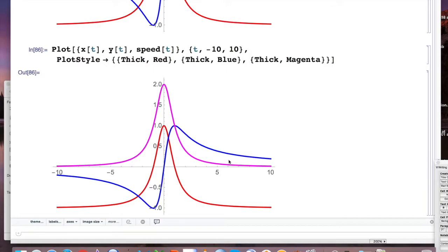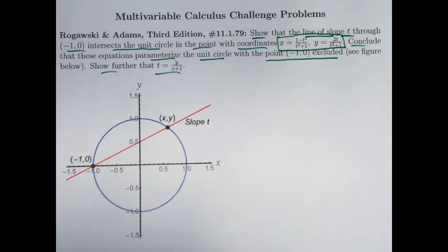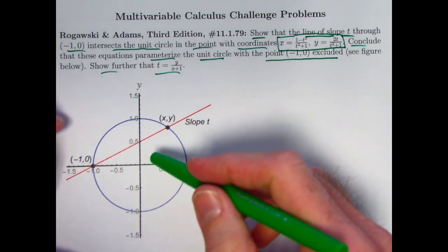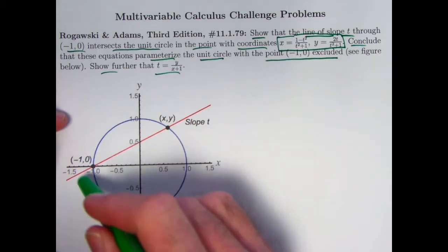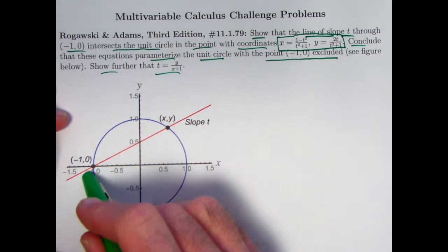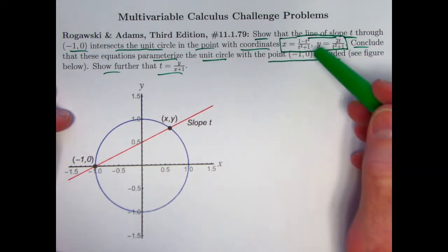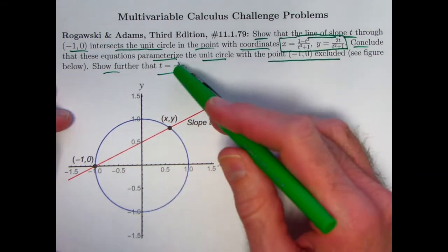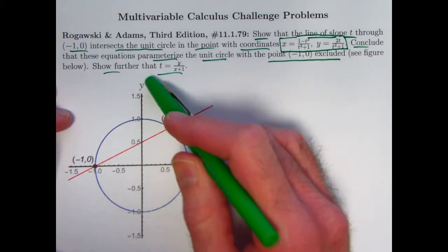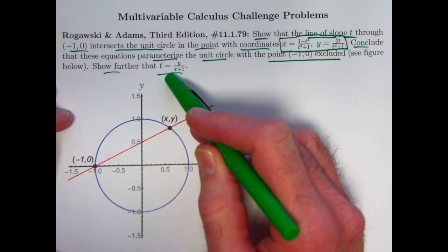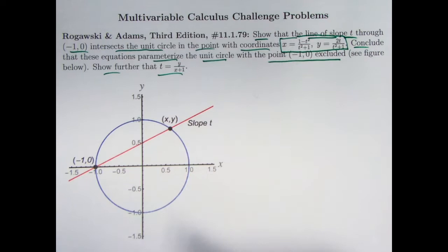And you can graph the speed if you're interested. This magenta-colored graph is the speed. You can see it starts out close to 0, increases to a maximum as we saw when t was 0, and then decreases towards 0 again. So that's the Mathematica I want to show you. Now let's go back to the problem. Now we're on to actually solving the problem.